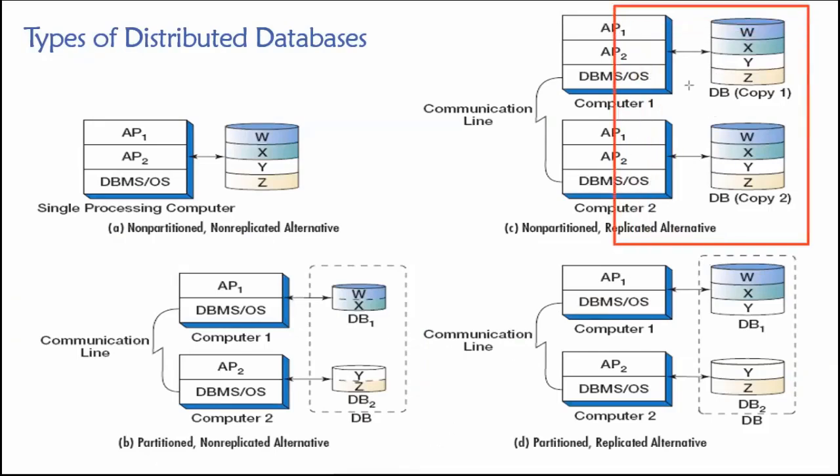All right, let's take a look at our third design. And that is shown up here in the upper right. And this is a non-partitioned, but replicated design. So in this case, what we're doing is we are keeping two exact copies of our database tables, W, X, Y, and Z that comprises the entire database. And we're doing that on two separate machines. So you'll see here, we have a copy number two and copy number one.